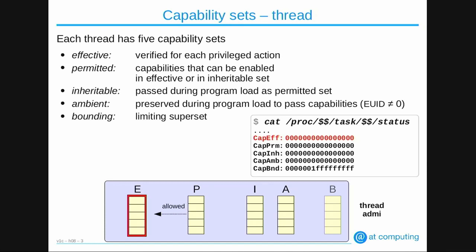Effective capabilities are verified all the time. We also see another bit list called permitted capabilities. Even if you have no effective capabilities, if you have them in the permitted set, you can always make them effective via special system calls. If you wipe away your permitted capabilities as a programmer, there's no chance of getting them effective again. Once you destroy the permitted capability, you cannot make them effective.